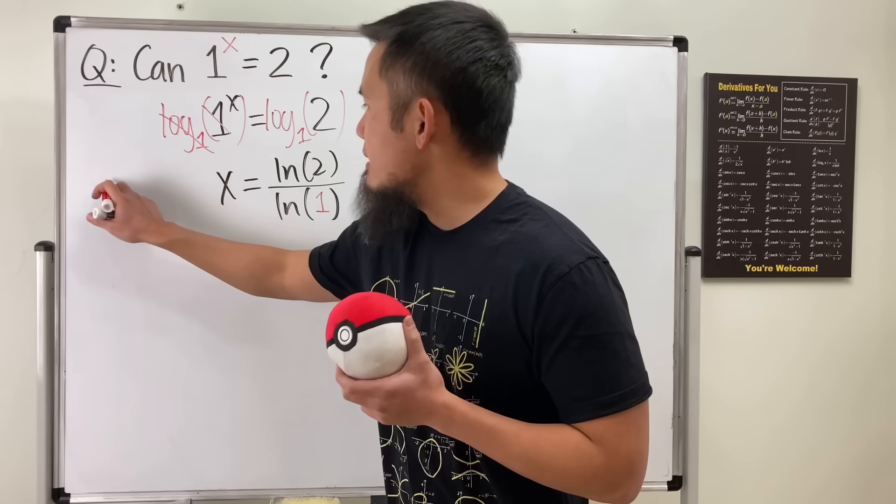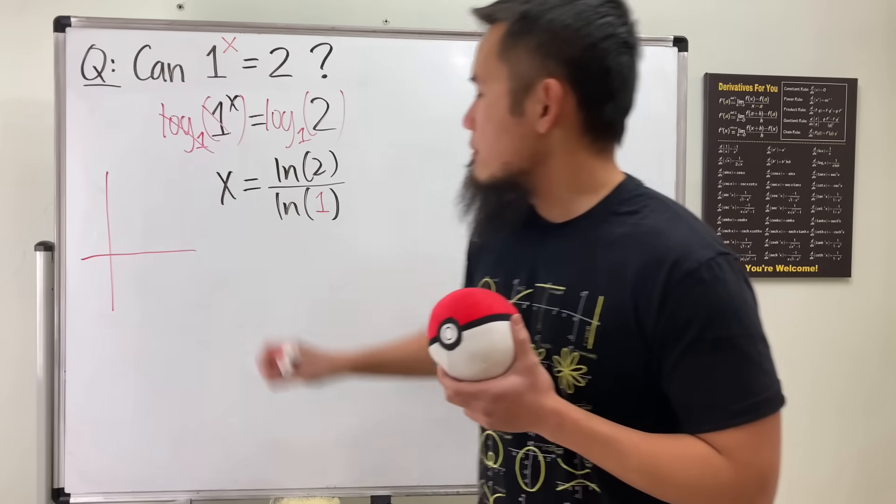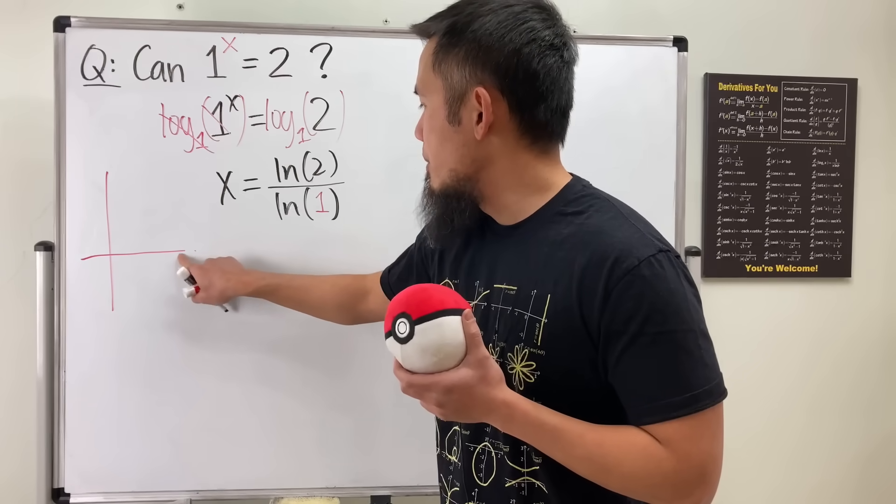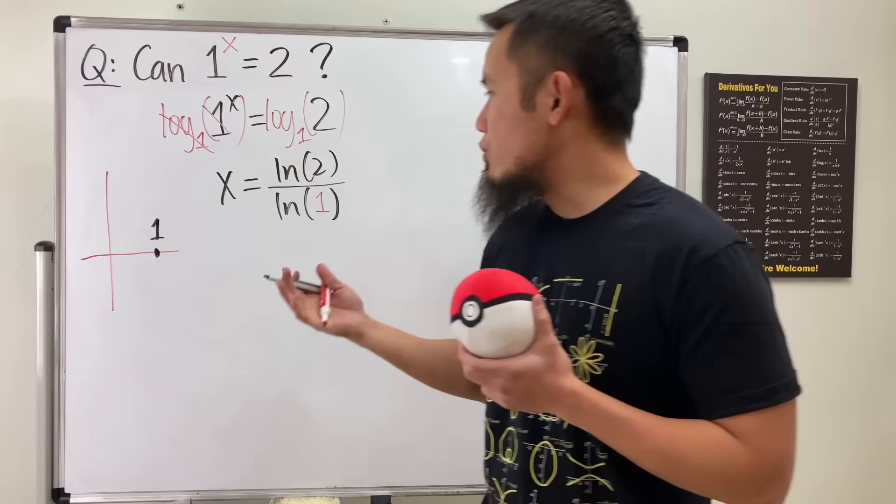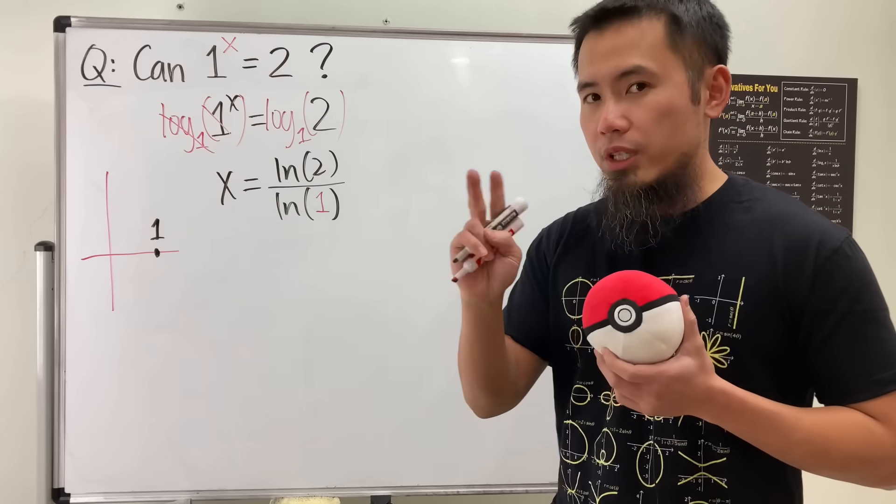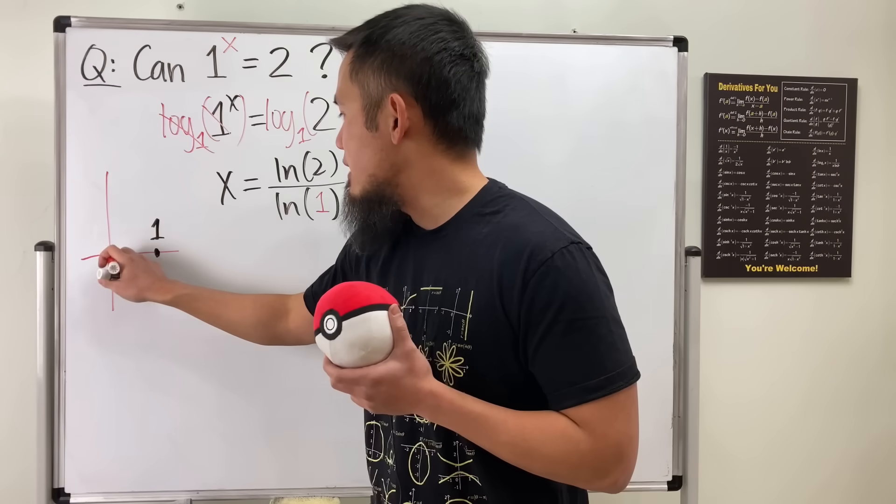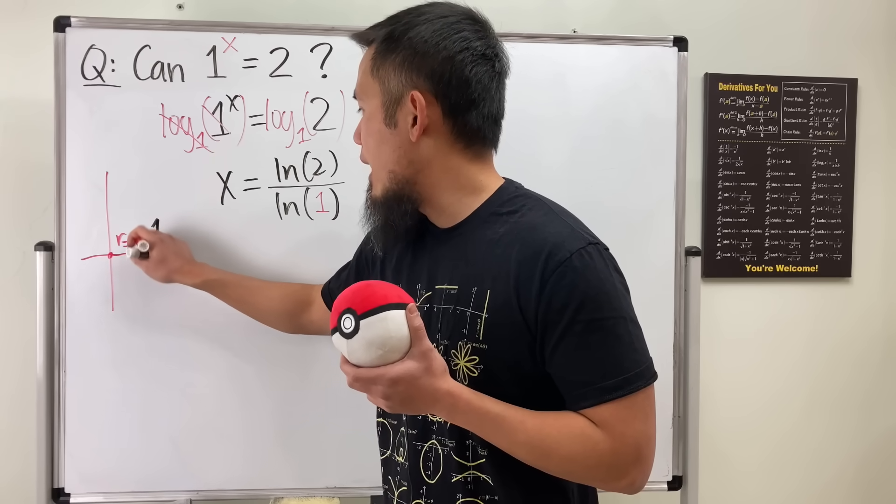Right here, let me do it on the side for you guys. 1 on the complex plane is going to be right here. And I want to change that to its complex form. We need two things. The first thing is the distance from the origin to here, which is just equal to 1.